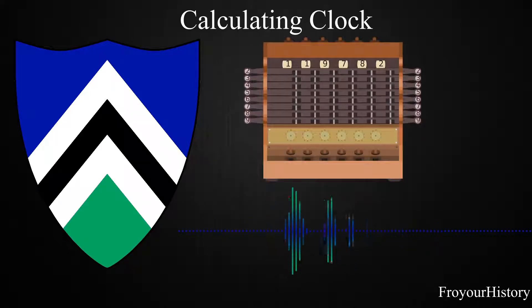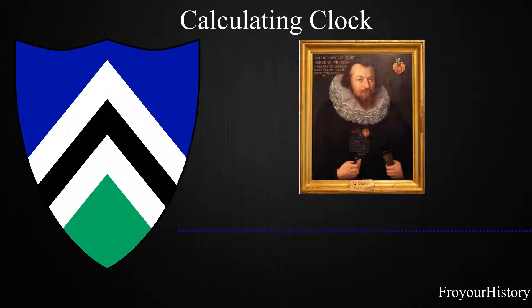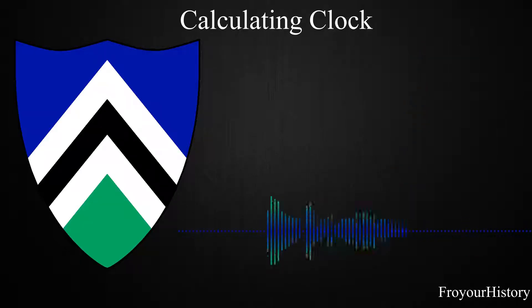The calculating clock was built by Wilhelm Schickard in 1623. He built two, including one for Johannes Kepler, the astronomer who discovered the laws of planetary motion. It was a wooden box with sliding panels, rotating gears, and bone tubes. It was the first calculator to do all four basic operations.